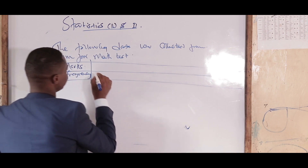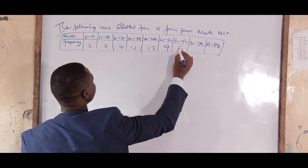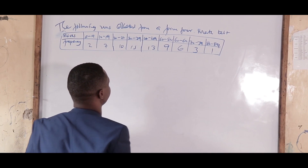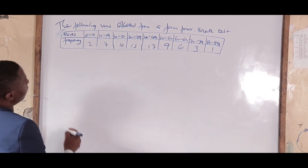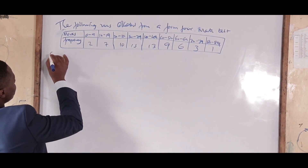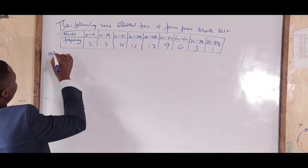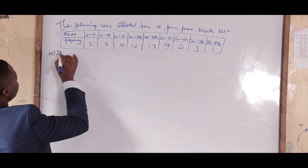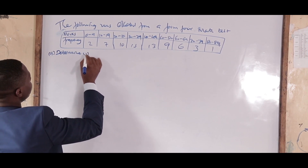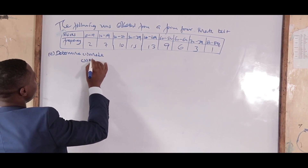The frequencies given in the data are 9, 6, 3, and 1. From this data you are supposed to calculate: 1 — mode; 2 — mean; 3 — median.